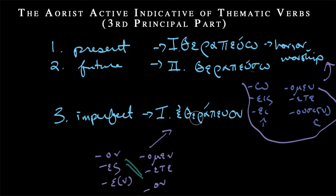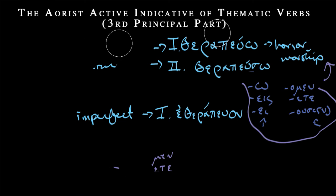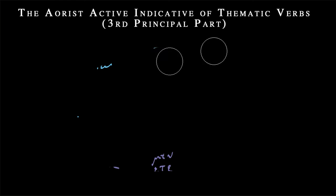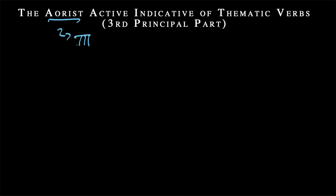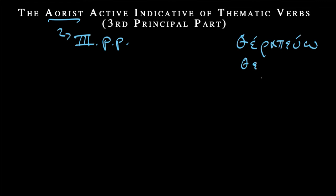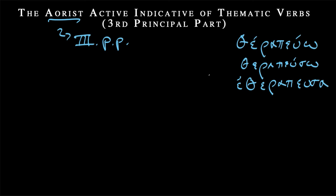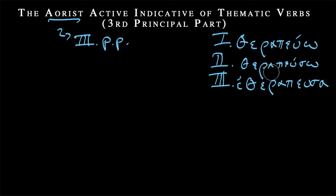So we have three tenses with different degrees of aspect. Now we're going to get into the aorist. The aorist, as I've mentioned in class a few times, is built from the third principal part. Going back to our example: therapello in the present, therapeuso in the future, and the third principal part — the aorist — was etherapeousa. Now that we've learned more Greek in the past few lessons, we can understand and break down this word a bit more.